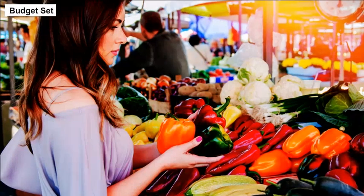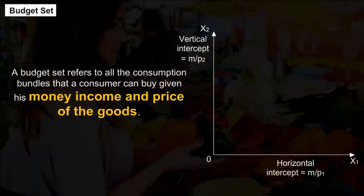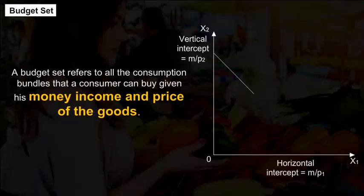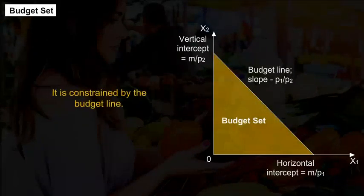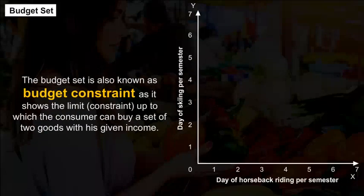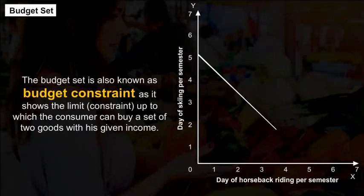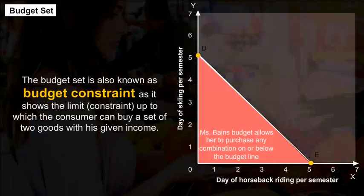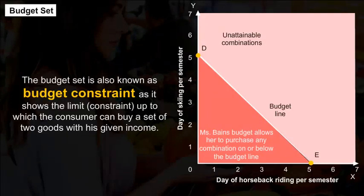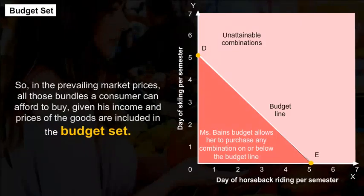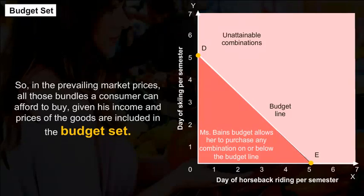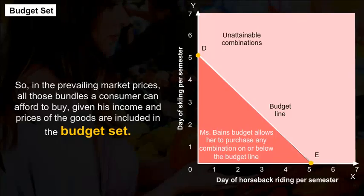Understand that the most preferred bundle of the consumer would be on the budget line, and how the optimum bundle is located on the budget line at the point where the budget line is tangent to an indifference curve. Learn that the graphical representation of the demand function is called the demand curve, and how the substitution and income effects act on the demands of goods when price and income change. Learn how for normal and inferior goods the demand rule behaves, and how market demand is calculated.